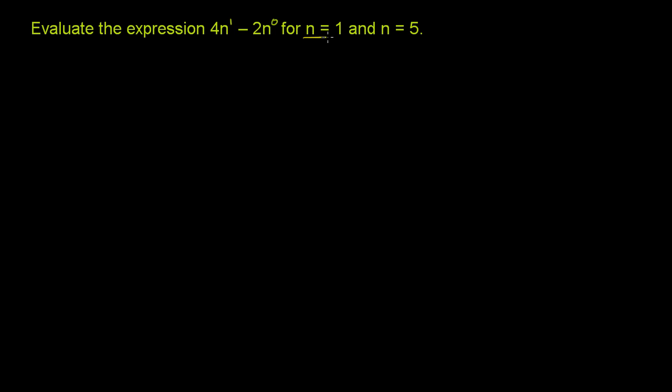So let's do n equals 1 first. Every place we see an n, let's put a 1 in there. So this is equal to 4 times 1 to the first power minus 2 times 1 to the zero power.